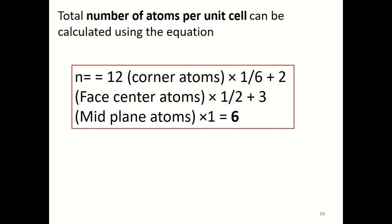So the total number of atoms that can occupy in a hexagonal HCP unit cell is six — that is the effective number of atoms.